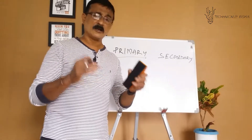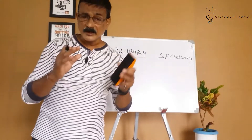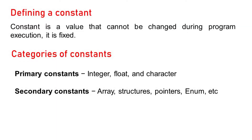Here is the definition: a constant is a value that cannot be changed. Under categories — primary: integer, float, and character; secondary: array, structure, pointer, enum. We've already seen this in the diagram.